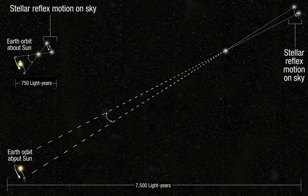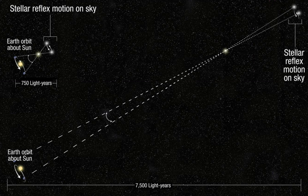Stellar parallax is most often measured using annual parallax, defined as the difference in the position of a star as seen from the Earth and Sun — the angle subtended at a star by the mean radius of the Earth's orbit around the Sun. The parsec is defined as the distance for which the annual parallax is 1 arcsecond. Annual parallax is normally measured by observing the position of a star at different times of the year as the Earth moves through its orbit. Measurement of annual parallax was the first reliable way to determine the distances to the closest stars.